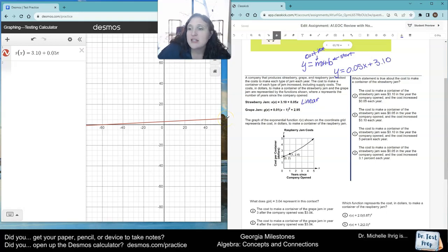So it says the initial cost was 3.10 in the year it opened. Yep. And it increased 5% each year. Yep. And so it's choice A. But let's just make sure it's not the other ones because we're good test-taking students. The cost to make a container of jam was five cents in the year it opened. Well, we just even know that doesn't make sense. How can you make a whole thing of jam for five cents? The container was $3.10. That's true. And it increased